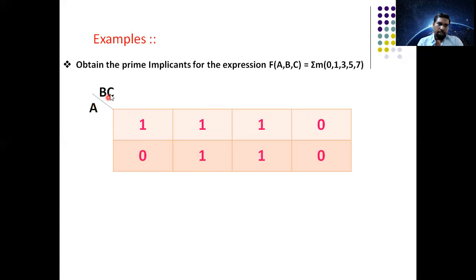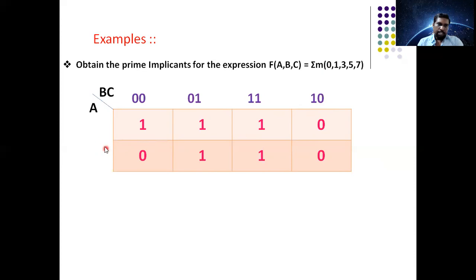Labeling is completed. Now, grouping of cells. First, verify whether an octet of 8 cells is possible — we only have 5 ones, so octet is not possible. Next, verify a quad. Yes, quad is possible here — these four ones are adjacent to each other, so I have made them a quad. After making this quad, only one cell remains, and the only possibility is to group it with the adjacent one.